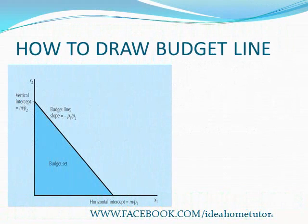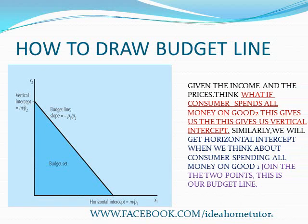After discussing the equation of the line, we'll see how to draw a budget line with given income and prices of the goods. Just think how much of good 2 the consumer could buy if he spent all the money on good 2. The answer is M upon P2. Then think about how much of good 1 the consumer could buy if he spent all the money on good 1. The answer is M upon P1.